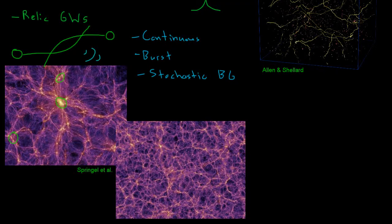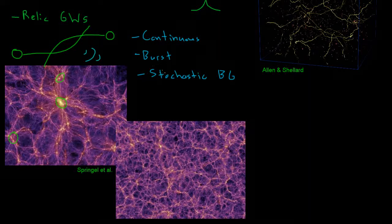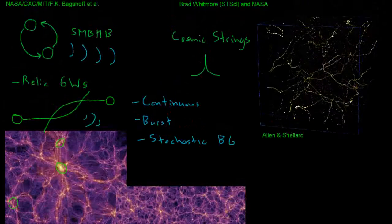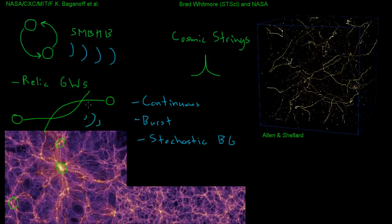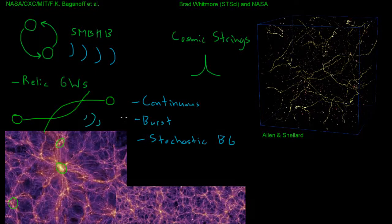Even though we can't resolve each individual supermassive black hole binary system in the stochastic background, there is still a lot we can learn by observing it. Detecting and identifying each of these classes of signals — continuous, burst, and stochastic background — require different methods of analyzing our pulsar signals, and we will be able to learn different things from each kind of signal. In the next few videos we're going to take a closer look at some of these different kinds of sources and discuss what NanoGrav will be able to learn from observing these gravitational waves.